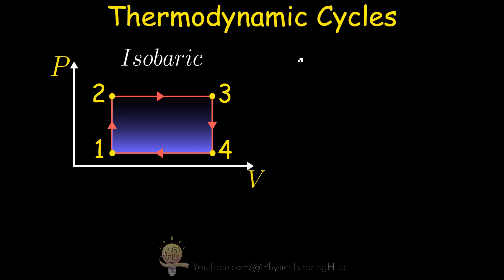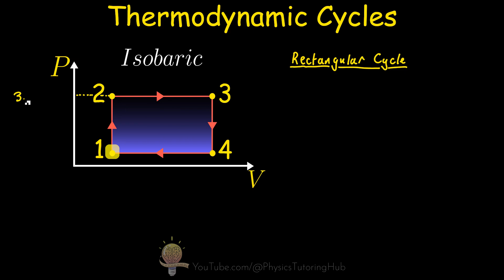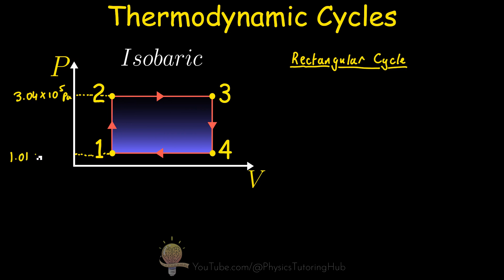In our first example, we're going to start with the most basic thermodynamic cycle — a rectangular cycle. A thermodynamic cycle is a series of processes where you start off in one state, for example state one, with a particular volume and pressure, and we move in a cycle where we end up in the same place that we started. Cyclical processes can move clockwise or counterclockwise on a PV diagram.